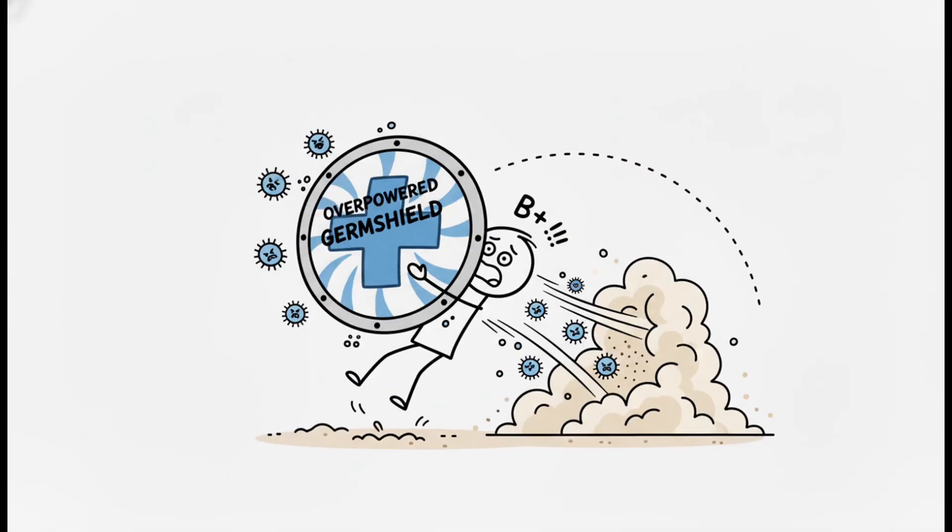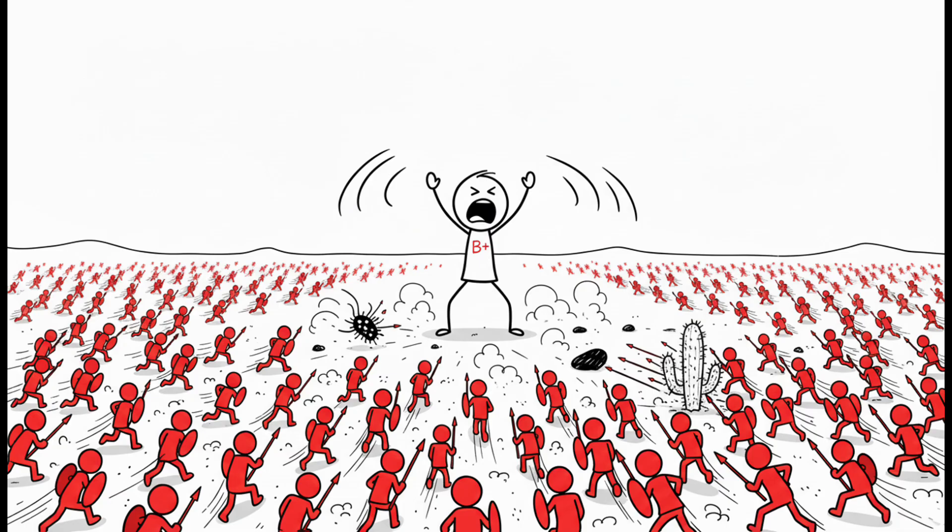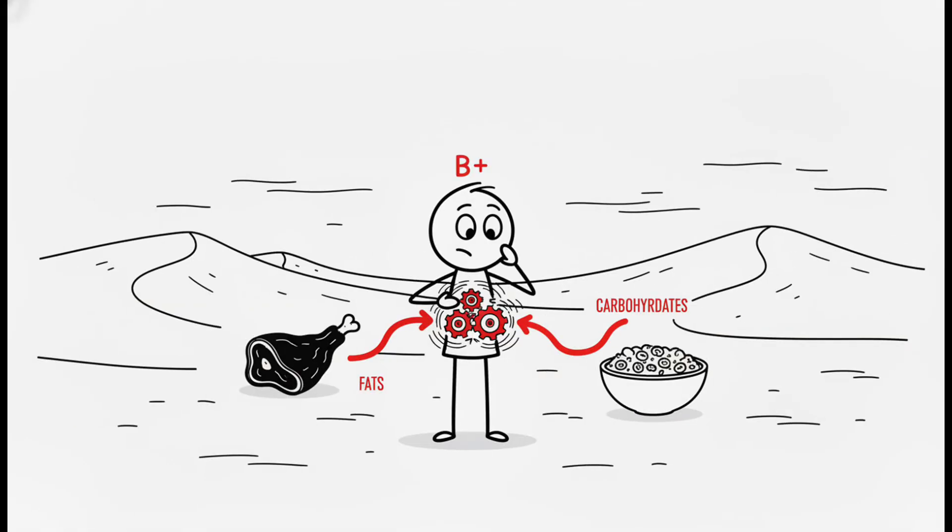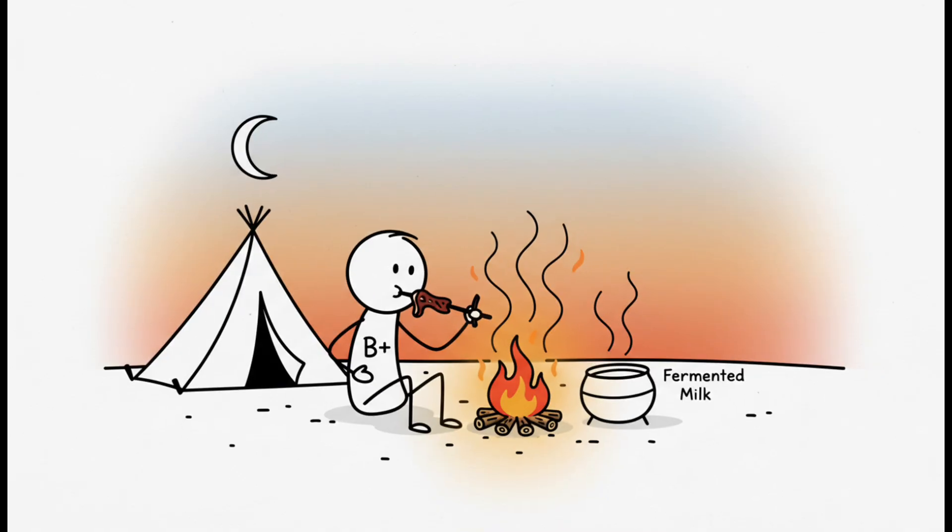The downside? That finely-tuned defense can backfire, making B-types more prone to inflammatory and autoimmune conditions. Your immune system is sometimes too good at fighting. Your metabolism tells the same story. Evidence suggests B-types process fats and carbs differently, an adaptation to diets rich in meat and fermented dairy.